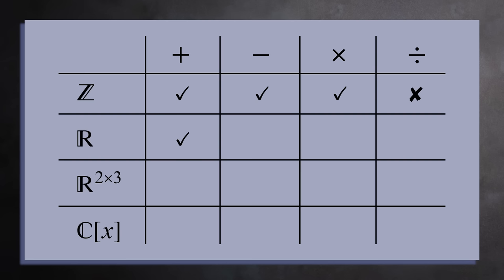For the real numbers you can add, subtract, multiply, and divide any two real numbers with the standard caveat that you cannot divide by 0. So the real numbers come equipped with all 4 operations.